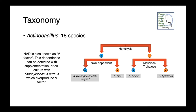Within the genus Actinobacillus, we have 18 species. We can group these at a high level by the production of hemolysins. Actinobacillus pleuropneumoniae and Suus are both hemolytic species, while Equuli and Lignieresii are not hemolytic. Actinobacillus pleuropneumoniae can then be differentiated from Actinobacillus suus by its dependency on NAD, also known as V-factor. The failure of Actinobacillus pleuropneumoniae to produce NAD means that it is dependent on exogenous sources.